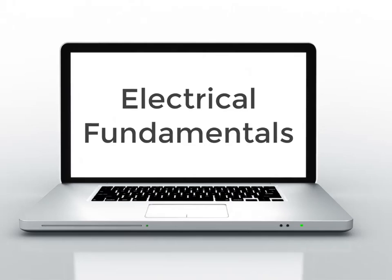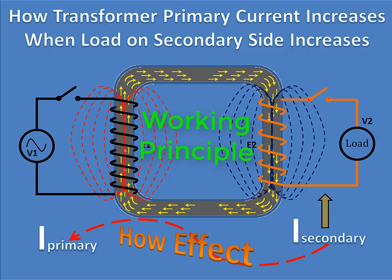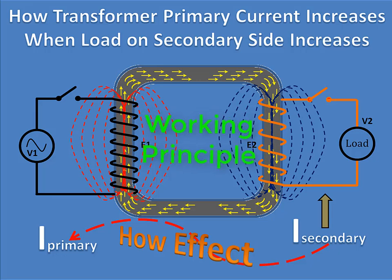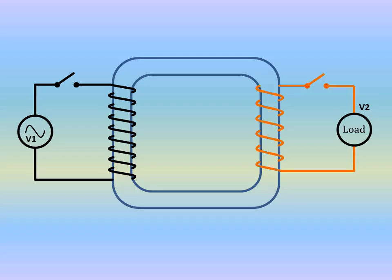Welcome back to the channel. In this video we're describing the working principle of transformers. We'll explore how the secondary current can increase primary current without any direct electrical connection between the two circuits. A transformer is a static device that changes the voltage level from one circuit to another without affecting the frequency or power.